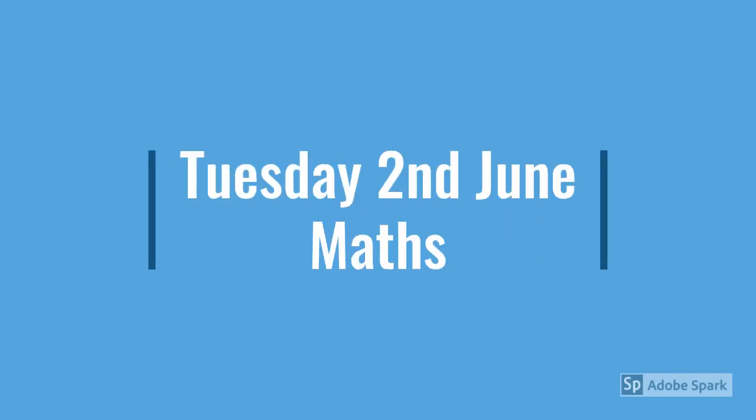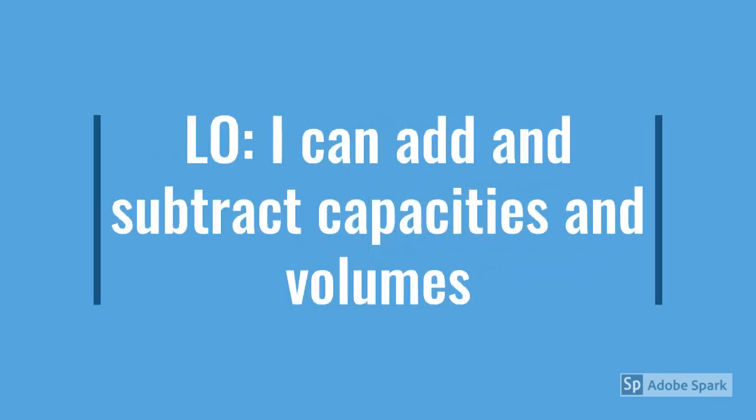Good morning Year 3. Today is Tuesday the 2nd of June and it will be your second maths lesson. Today our learning objective is to add and subtract capacities and volumes and for this lesson it is really important to remember that there are 1000 millilitres to a litre.